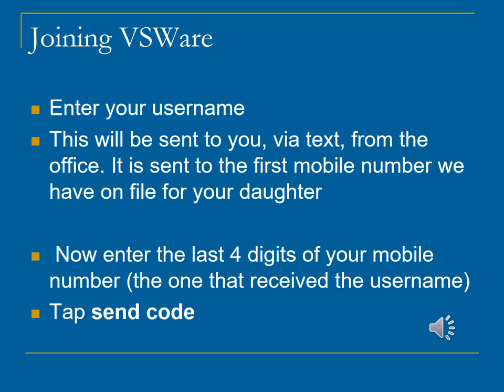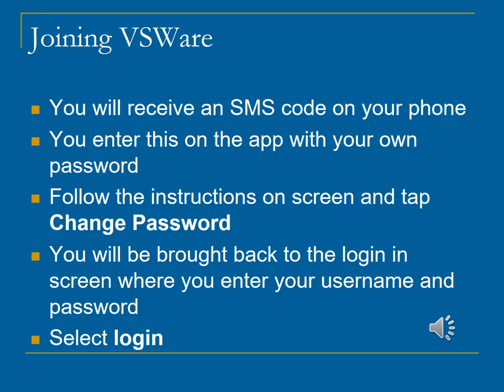You will also enter the last four digits of the mobile number that received the text and then click on send code. Please enter the SMS code sent to your phone. You will also need to enter a password. You are led through this simple process by VSWare. You will now be prompted to log into your VSWare dashboard.